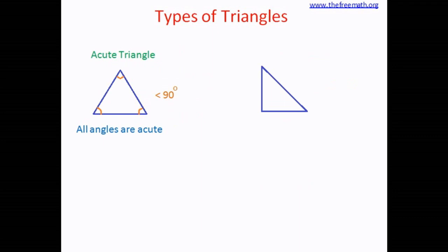Here is another triangle. You can see that this triangle has a right angle — an angle that measures 90 degrees. When a triangle has a right angle, it is called a right triangle. Can it have more than one right angle? No, because the sum of the three angles always equals 180 degrees. One angle measures 90 degrees, so the remaining two angles together also measure 90 degrees, meaning there cannot be any other right angle.